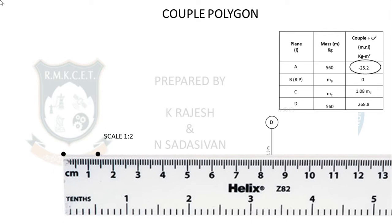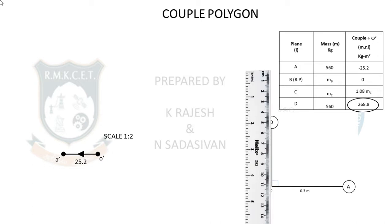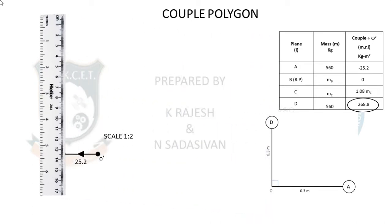So O′ to A′ is 25.2 in the negative direction (rightward arrow reversed). Next, draw D — since B = 0 and C is unknown, use D. D is 268.8 in the vertical direction. Scale 1:2 gives 268.8 ÷ 2 = 134 mm. Draw a vertical upward-pointing arrow from point A′ (not from O) because it is positive.